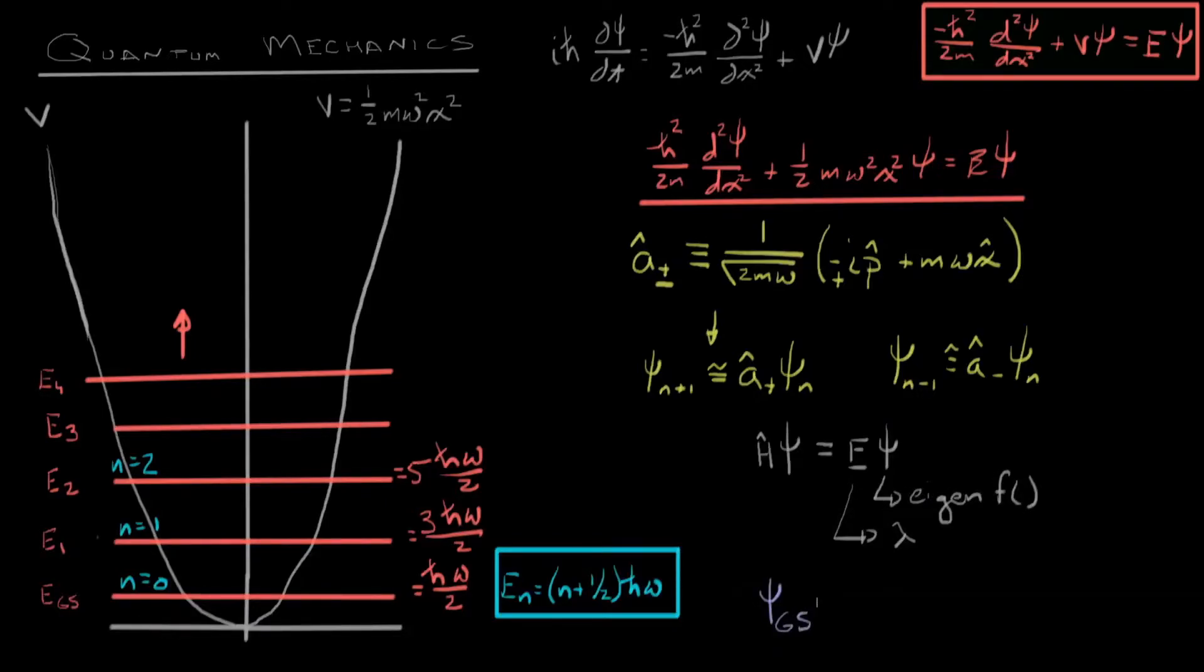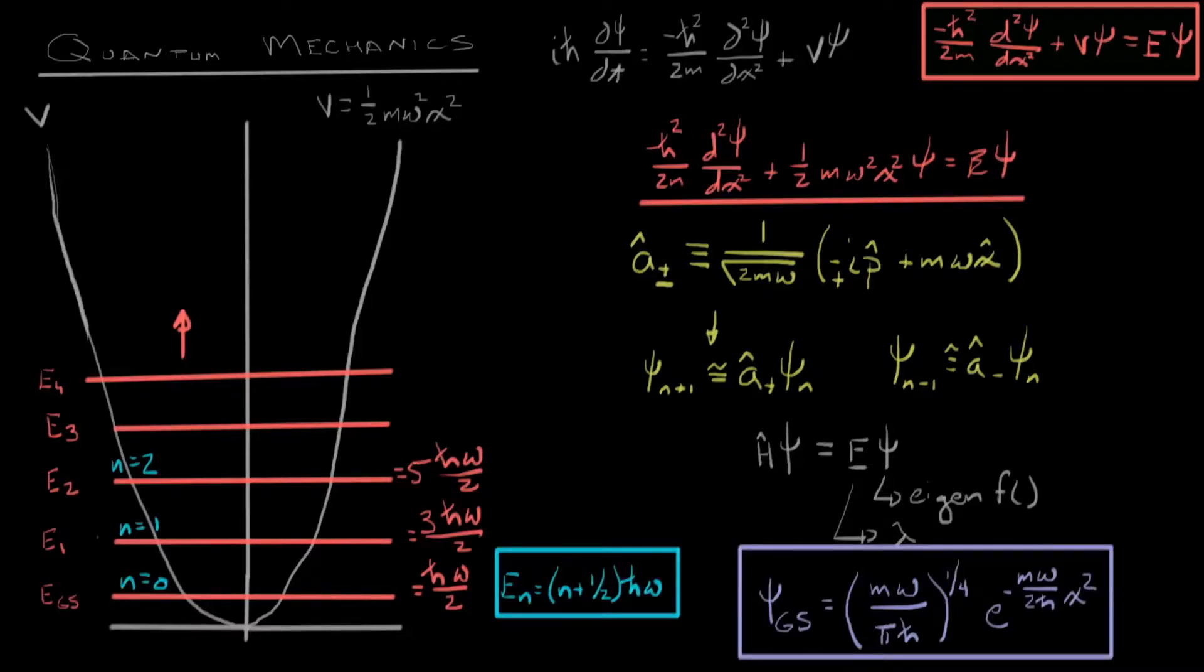The final nice piece of information that's useful to have is an actual waveform. So if we go through a bunch of mathematical steps that we'll kind of explore in our next video, we find that the ground state looks like this. For those of you who remember a little bit of statistics or have seen something like this before, we have an e to the negative x squared, which is a Gaussian distribution.